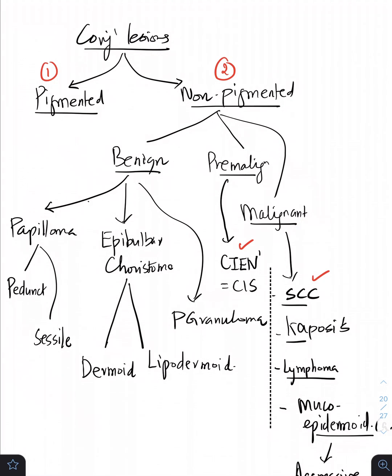But the pre-malignant and malignant lesions are going to be our concern. The pre-malignant lesion is going to be called as carcinoma in situ or conjunctival or corneal intraepithelial neoplasia.